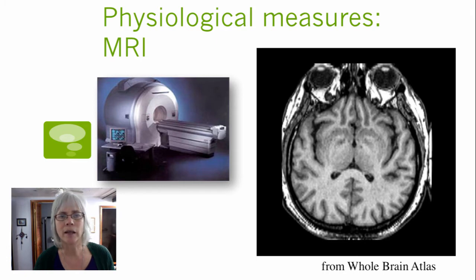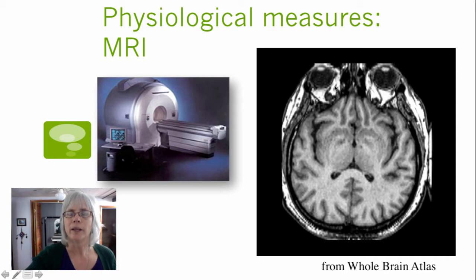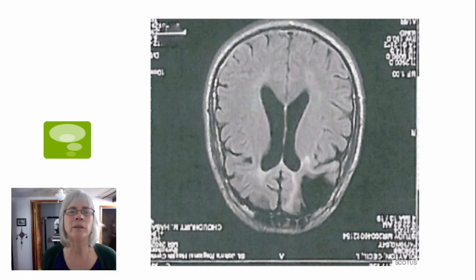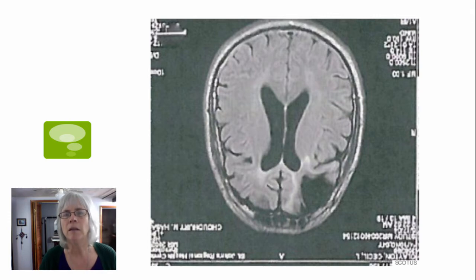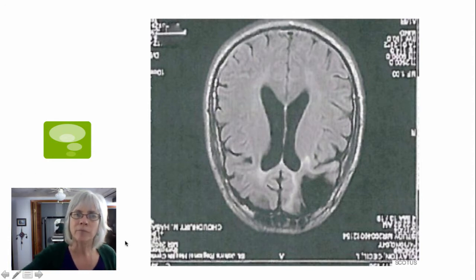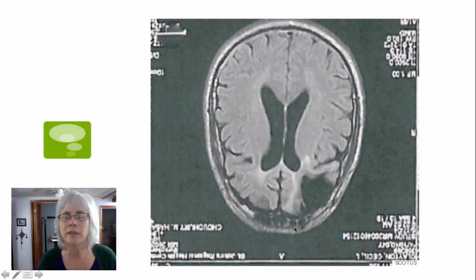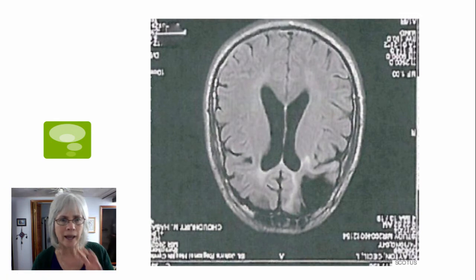Here's another MRI. In this case, we're seeing a healthy brain — here are the eyes. In this screen, you see the brain of Cecil Clayton, who was executed in 2015. He had experienced some brain damage in the course of his work, damaging the left frontal lobe. The eyes are here on this scan.